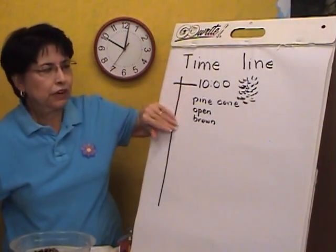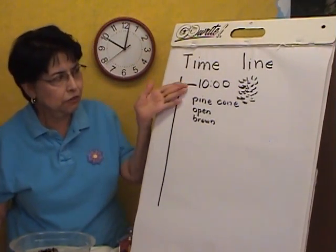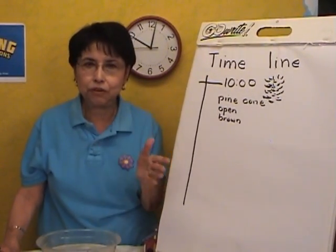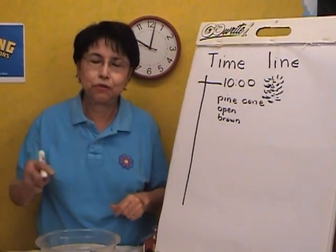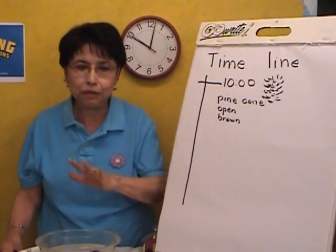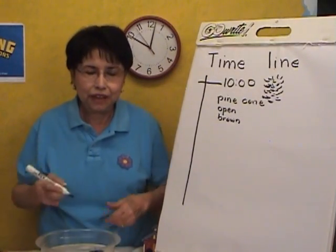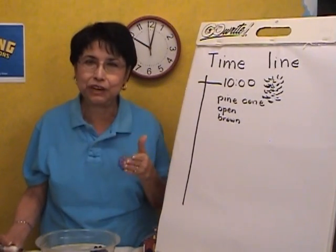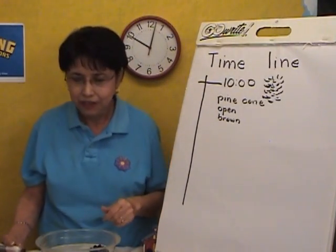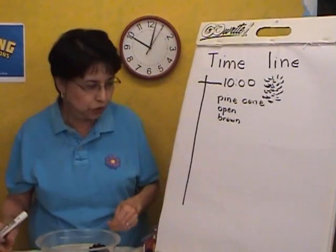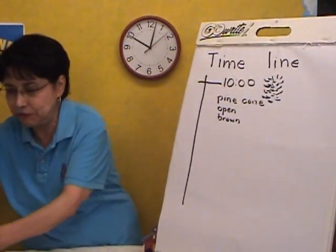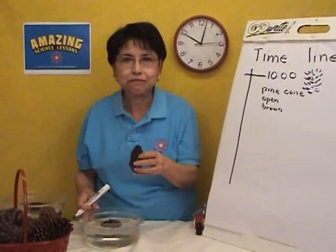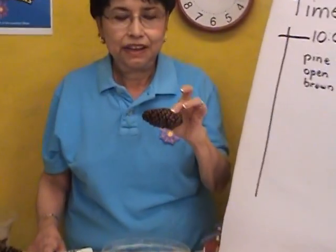For older children it's very important that you continue writing; younger children just write the time. While children are doing their drawing in their journal, you as a teacher come around to see them, and you'll start hearing children already anticipating what's going to happen. For video purposes, I'm going to show you a pine cone that has been sitting for 15 minutes.